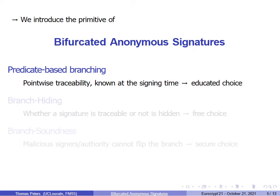To answer this question, we introduce bifurcated anonymous signatures. In bifurcated anonymous signatures, the branch is selected by a predicate at the signing time. Depending on the content and even on some information related to the context, the predicate value determines pointwise whether the signature will fall in the statistical anonymity branch or in the traceability branch. Moreover, this predicate value is easily computable by the signer, who can thus make an educated choice as to whether he or she can afford signing.